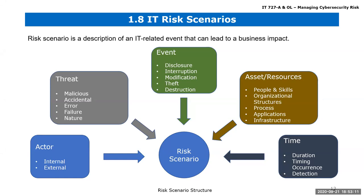The student is shocked because she knew the ransomware hit 31 companies but only knew about Garmin. She analyzes the scenario using the framework: external actor, malicious threat, the event is interruption since they can't access their system, and Blackbaud paid the ransom to get access back. She asks what the asset or resource would be in this case — people, or infrastructure?